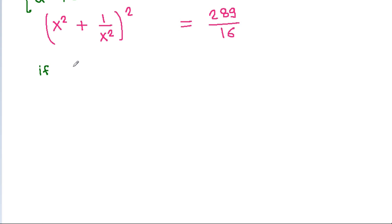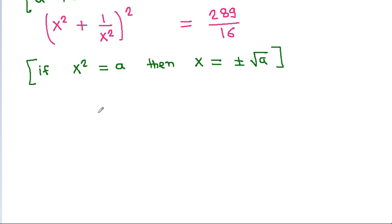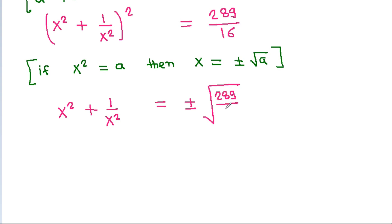If x square is equal to A, then x is equal to plus minus square root of A. So x square plus 1 by x square is equal to plus minus square root of 289 by 16, which is plus minus 17 by 4, since the square root of 289 is 17 and the square root of 16 is 4.